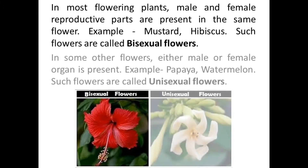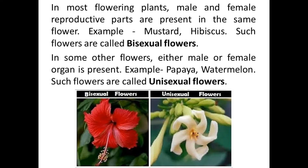But in some other flowers, either the male or female organ is present — the male flower is separate and the female flower is separate. For example, papaya and watermelon. These flowers are known as unisexual flowers. 'Uni' means one, so in one flower only one sex organ is present, either male or female.